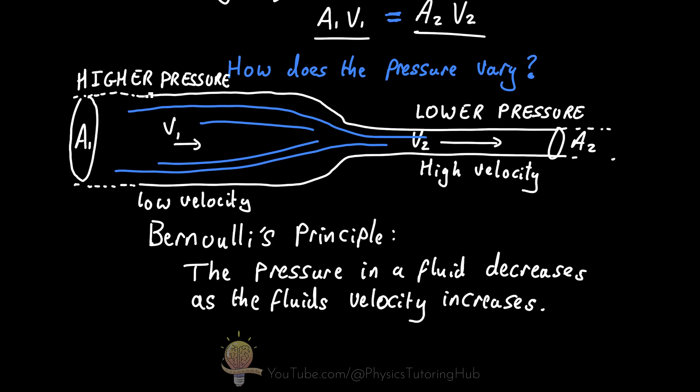It is in fact this pressure difference that causes the water to accelerate as it enters the narrow part of the pipe, and therefore the water's velocity increases.